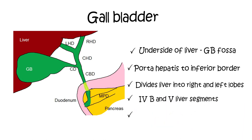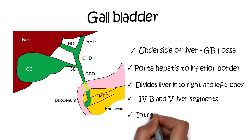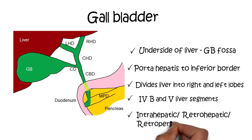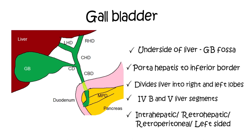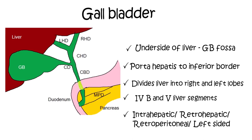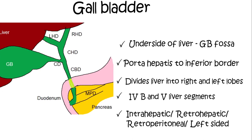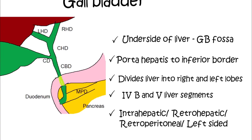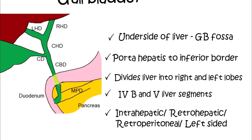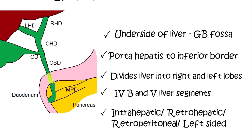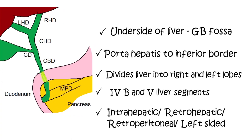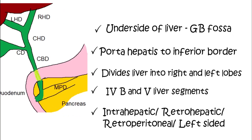There are anomalies with the location of the gallbladder. It can either be totally within the liver, known as the intrahepatic position, or it can be behind the liver, known as the retro-hepatic position. It can also be in a retroperitoneal position, or it can even be on the left side, which is very rare, accounting for 0.2% of cases.